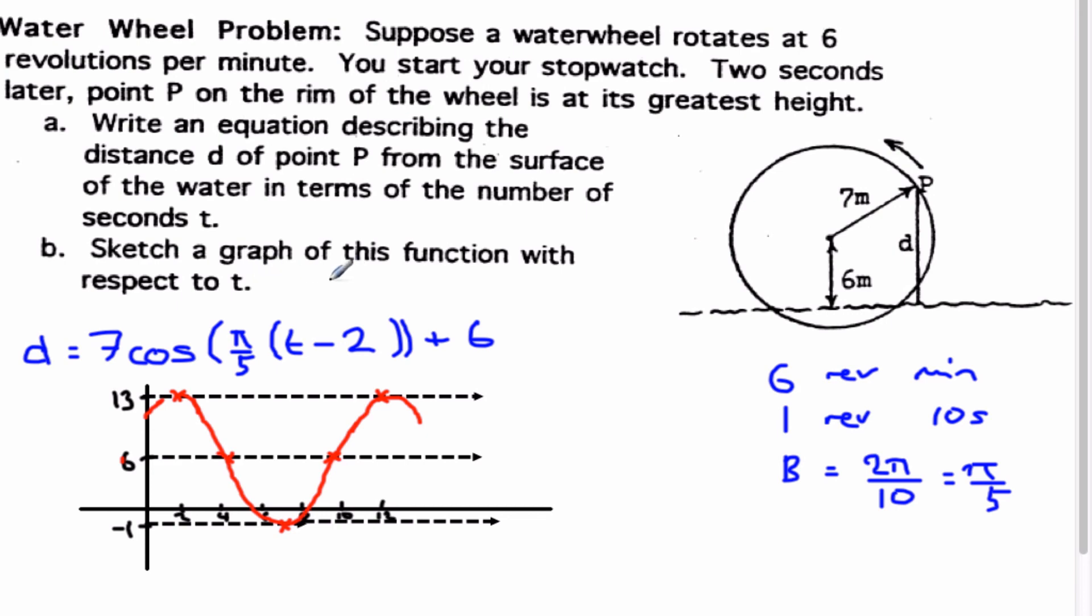And it says function with respect to T, so let's just label up. I've got this axis is T and this going up here, this was my distance D above the water level. There we have it.